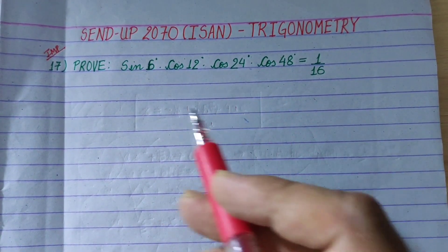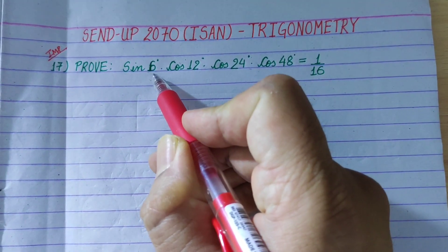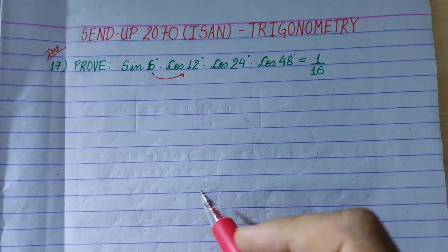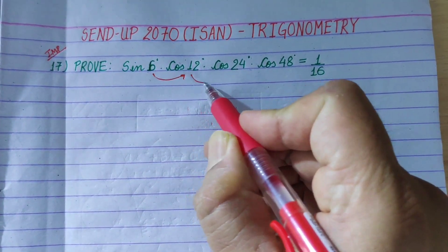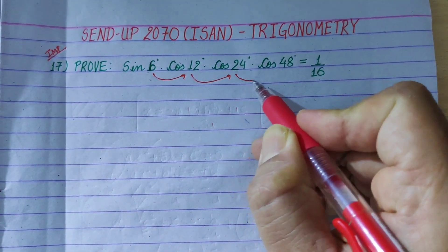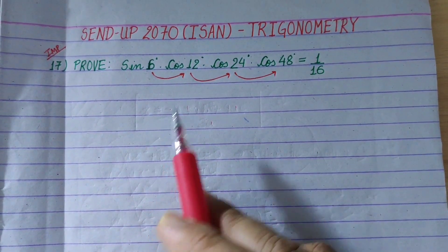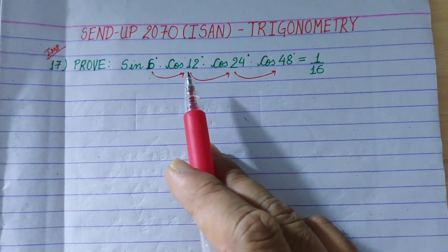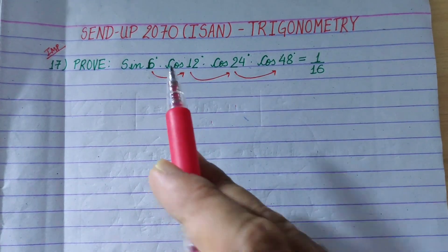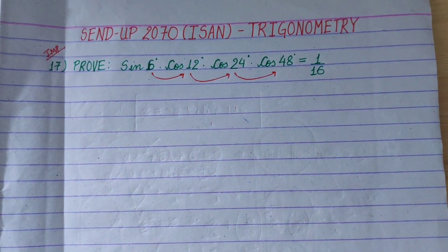Now, notice that the angles are doubling: 6 is double to 12, 12 is double to 24, and 24 is double to 48. So I am going to use the double angle formula for cosine.